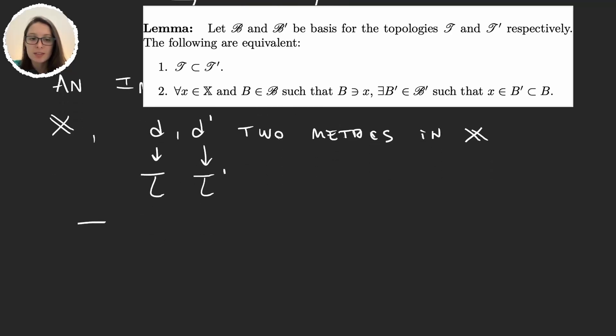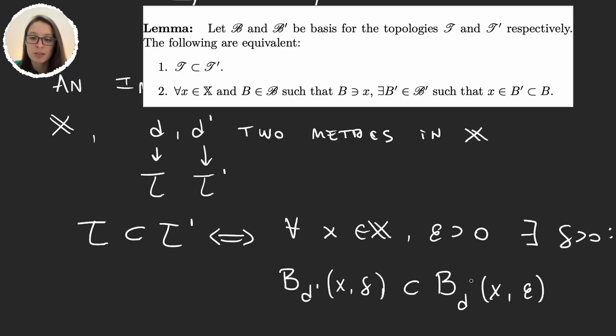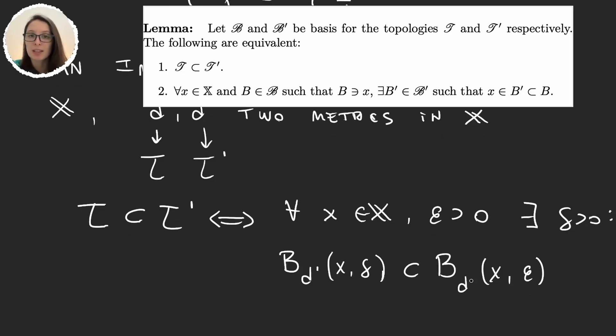tau is going to be a subset of tau prime, so tau prime is finer than tau, if and only if for every x in the space and every radius epsilon positive, there exists another radius delta such that the ball with the metric d prime, so the one that induces the finer topology with center in x and the radius this delta that we want to find, is a subset of the ball constructed with the metric d with center in x and radius epsilon. This is very simple once we know this lemma because we know exactly what our bases are. The bases of tau prime are the balls constructed with the metric d prime, and the bases for tau are the balls constructed with the metric d.